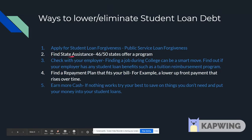Number two, find state assistance — 46 out of 50 states offer a program. Number three, check with your employer. Finding a job during college should be a smart move. Find out if your employer has any student loan benefits, such as a tuition reimbursement program. Number four, find a repayment plan that fits your bill, for example a lower upfront payment that arises over time. Number five, earn more cash. If nothing works, try your best to save on things you don't need and put your money into your student loans. Eventually, you will get there.